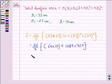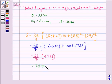Now, this is further equal to 22/7 multiplied by 2418 and this is equal to 7599.43 cm².